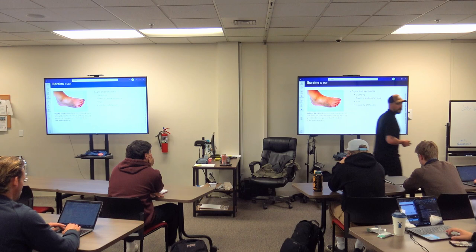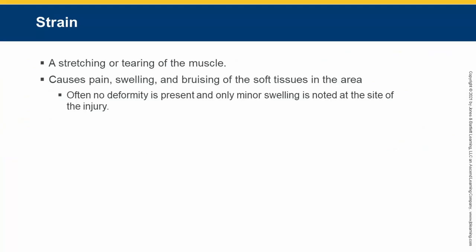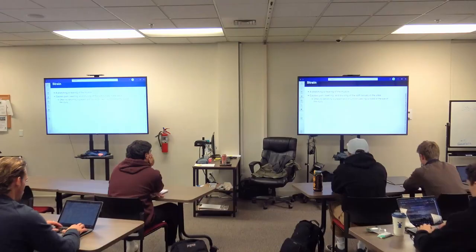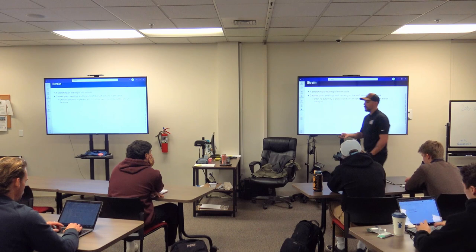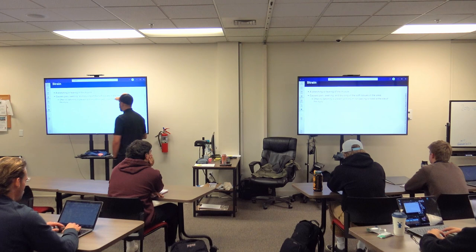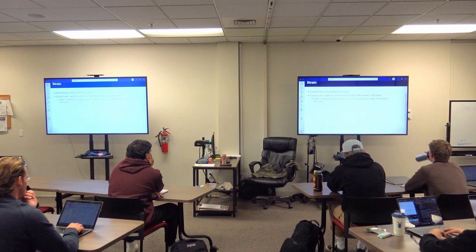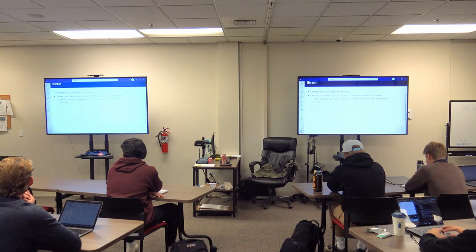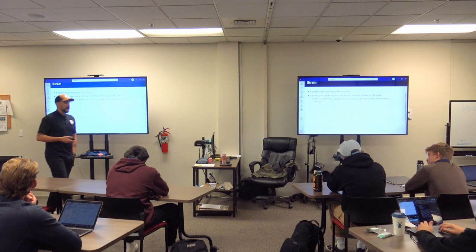A strain is a pulled muscle — same thing. 'Strained' and 'pulled' mean the same thing, just like 'fractured' and 'broken.' Signs include pain, swelling, and bruising of the soft tissue in the area, along with possible impact on movement. Often no deformity is present, though there may be some minor swelling.